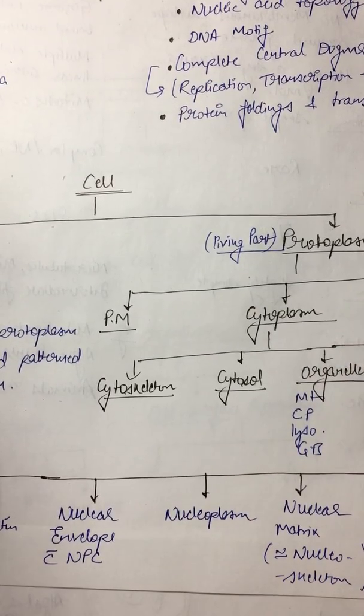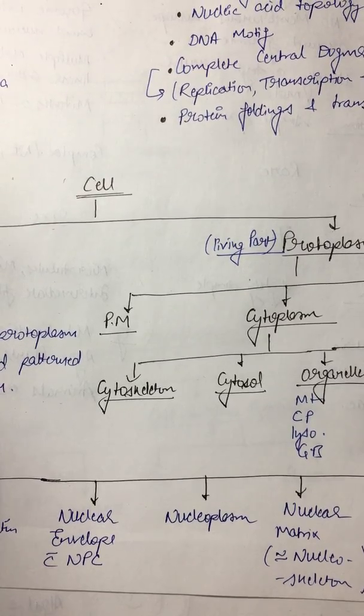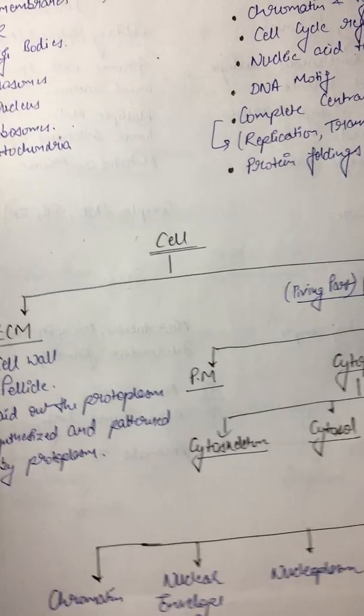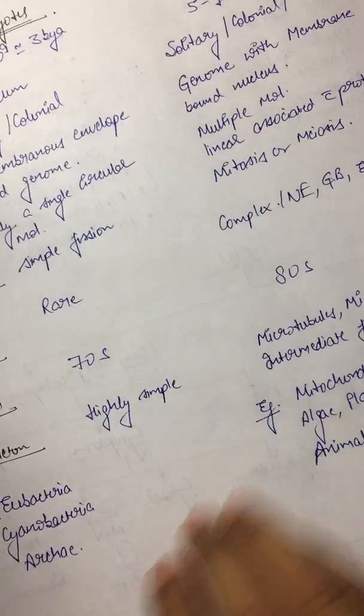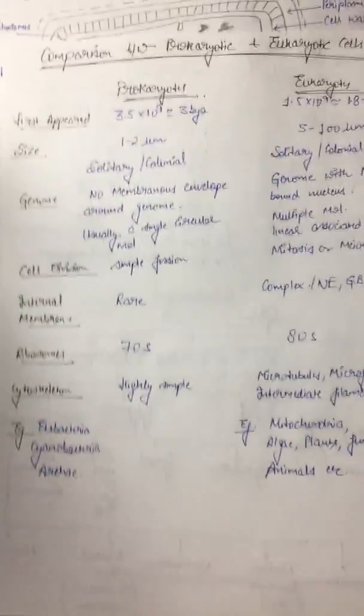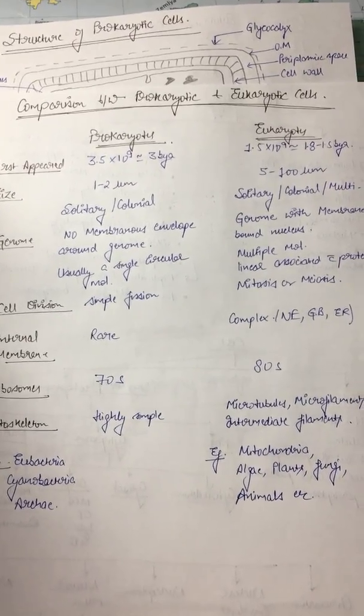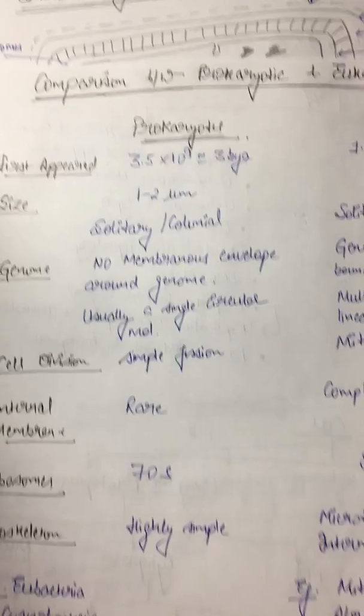We are going to study in detail about the different organelles which are present in the cell. Here I have prepared a chart form to differentiate between the prokaryotes and eukaryotes. We will see one by one.